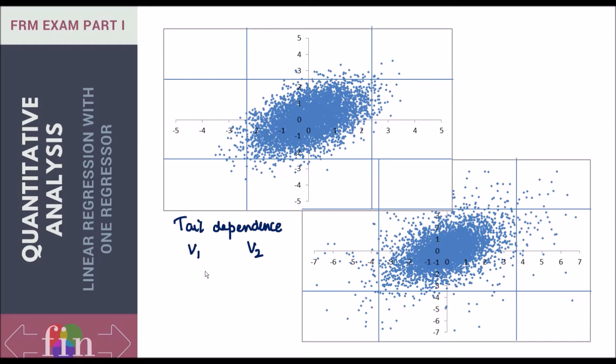If you take a look at two popular distributions, the normal distribution versus the student's t distribution, you'll find that student's t has more tail dependence. In student's t distribution, it's more common for two variables V1 and V2 to jointly experience extreme moves compared to if these variables were normally distributed.